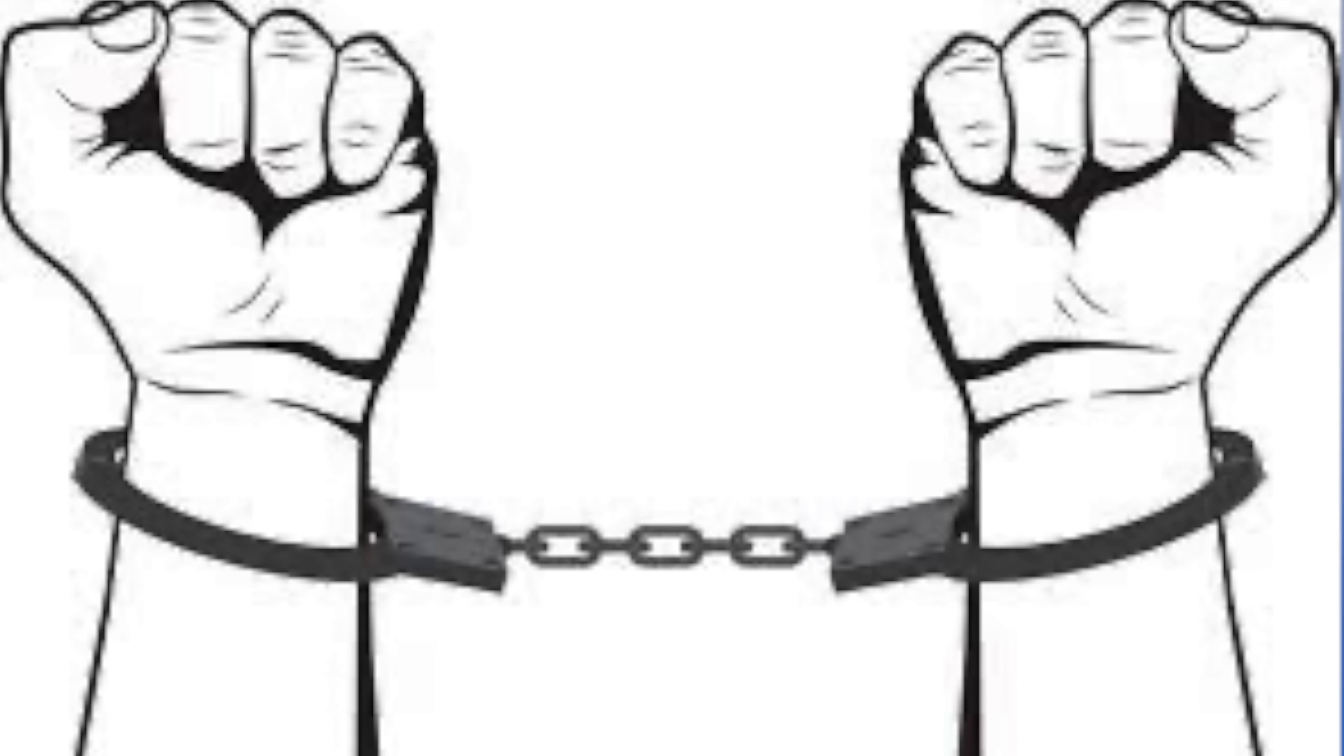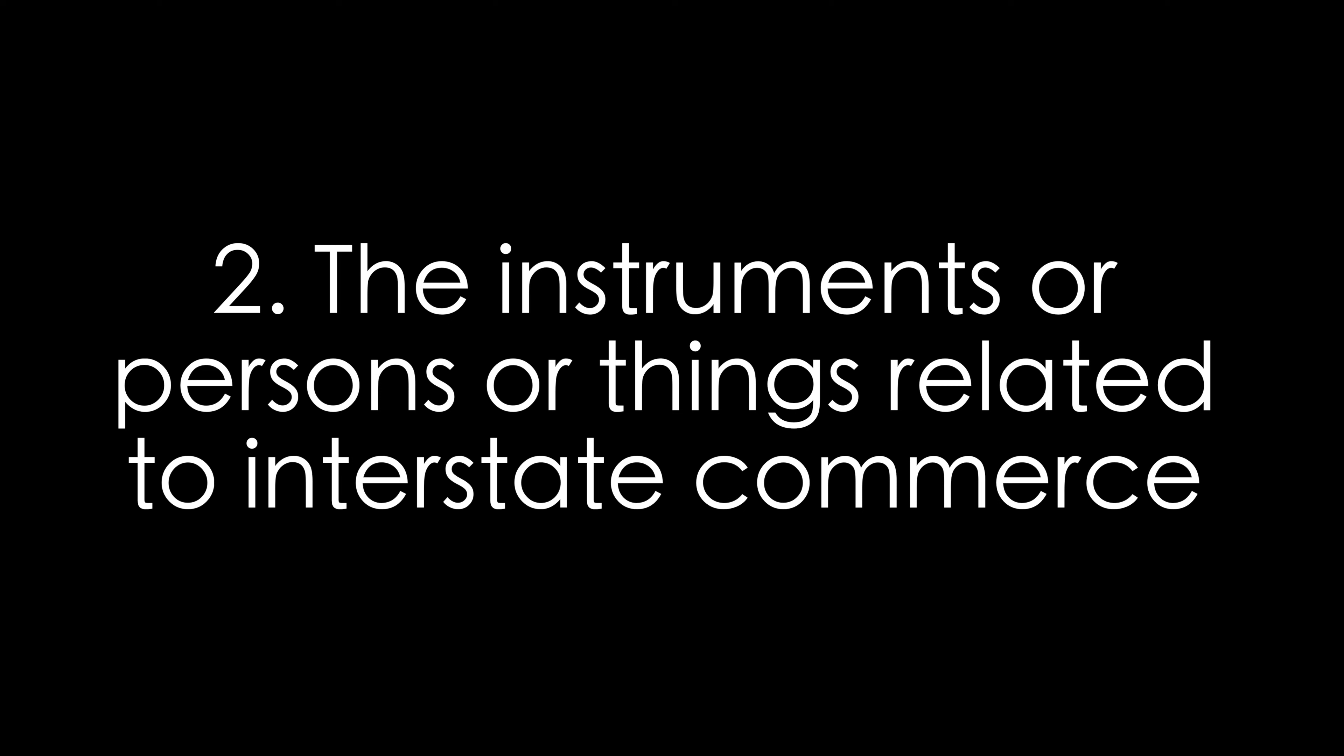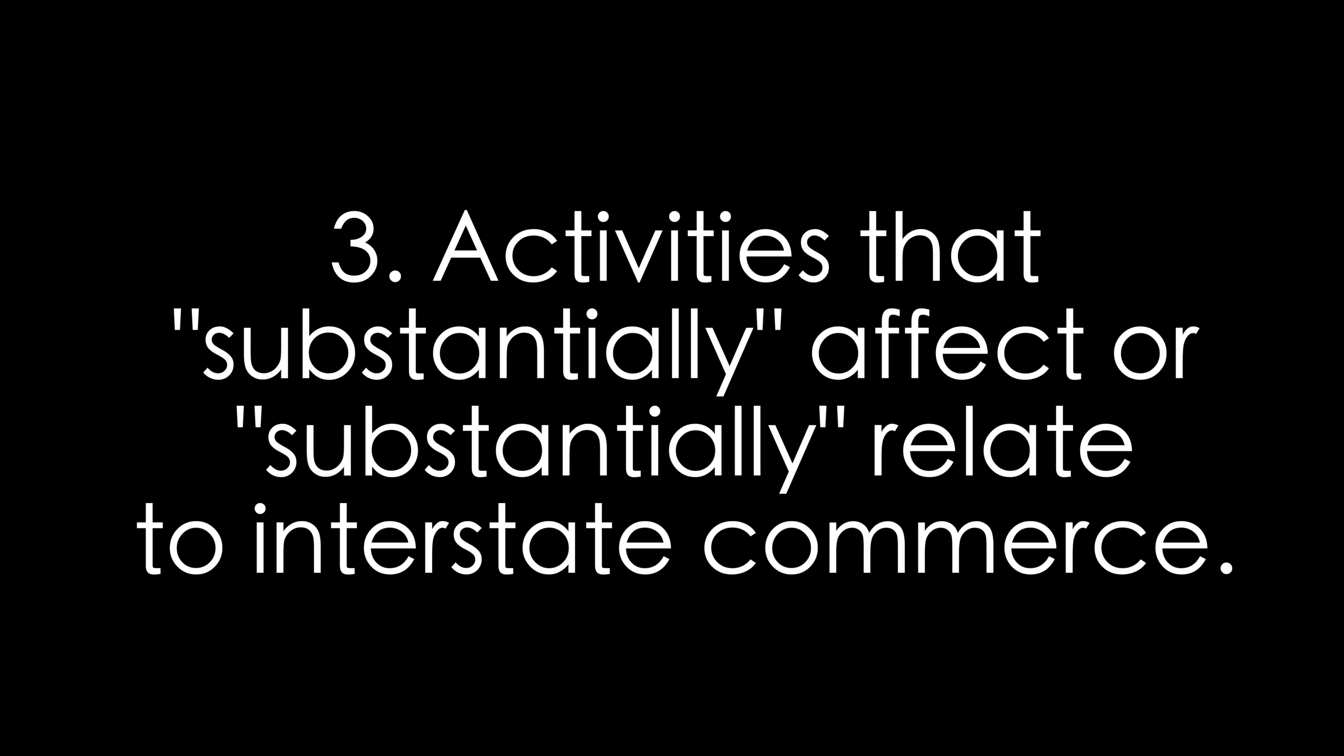Rehnquist outlined three constitutional permissible uses of the Interstate Commerce Clause and here they are. Number one, the use of channels of interstate commerce. Number two, the instruments of interstate commerce or persons or things in interstate commerce. And number three, activities that substantially affect or substantially relate to interstate commerce. None of these pertained to regulating Lopez's ability to carry a gun within a thousand feet from a school. Carrying a gun near a school was simply not a commercial activity and it did not substantially affect or relate to interstate commerce.